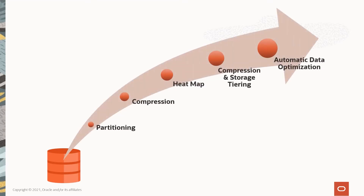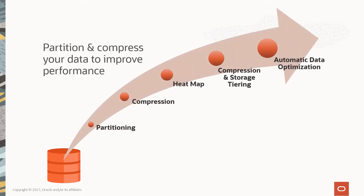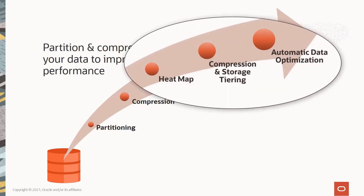Did you know that partitioning and compressing your data not only saves on storage but also improves performance? Oracle offers many enabling technologies in the database that address the ill effects of data growth, including degrading performance. These capabilities can be used independently, or as you'll see, better together. Since we covered partitioning and compression in prior segments, today we're going to focus on the more advanced capabilities: heatmap, compression and storage tiering, and Automatic Data Optimization or ADO.